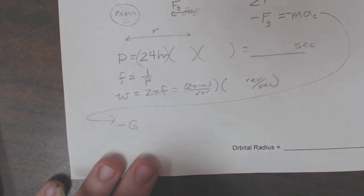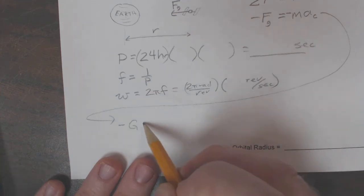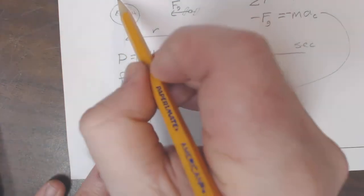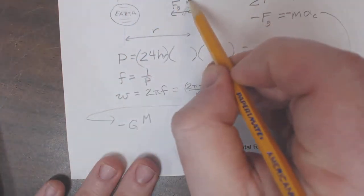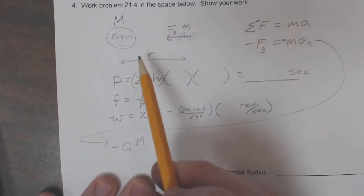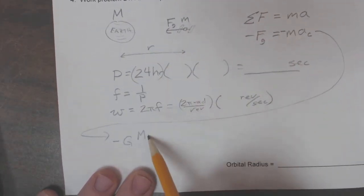which is a universal gravitational constant, times the mass of the Earth, that's the big M right here. We'll put a little m for the mass of the satellite, right there. And little m for the mass of the satellite, divided by r squared.